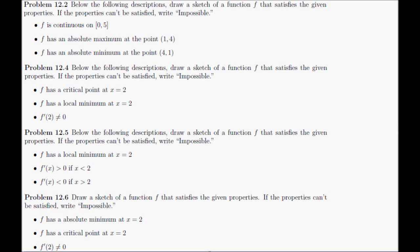Problem 12.2: draw a function that f is continuous on the region from 0 to 5, f has an absolute maximum at the point (1,4), and f has an absolute minimum at the point (4,1).